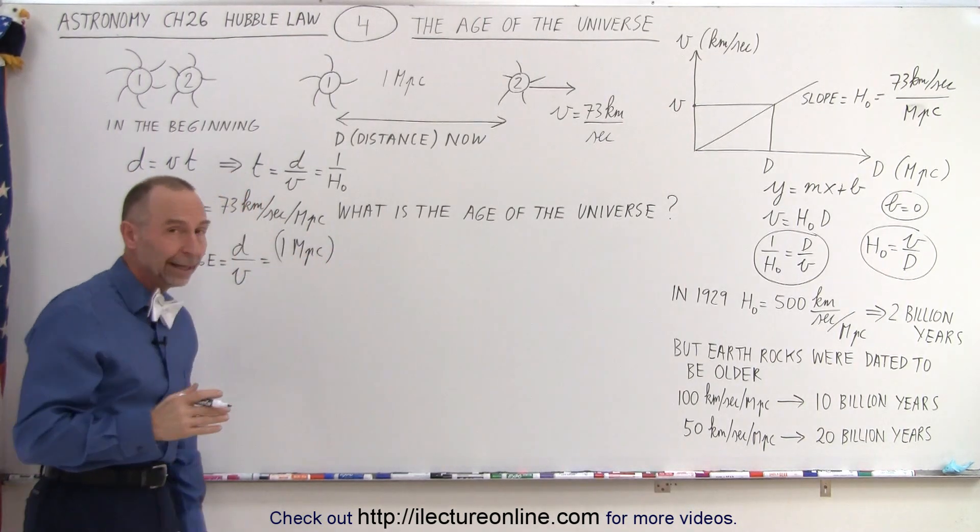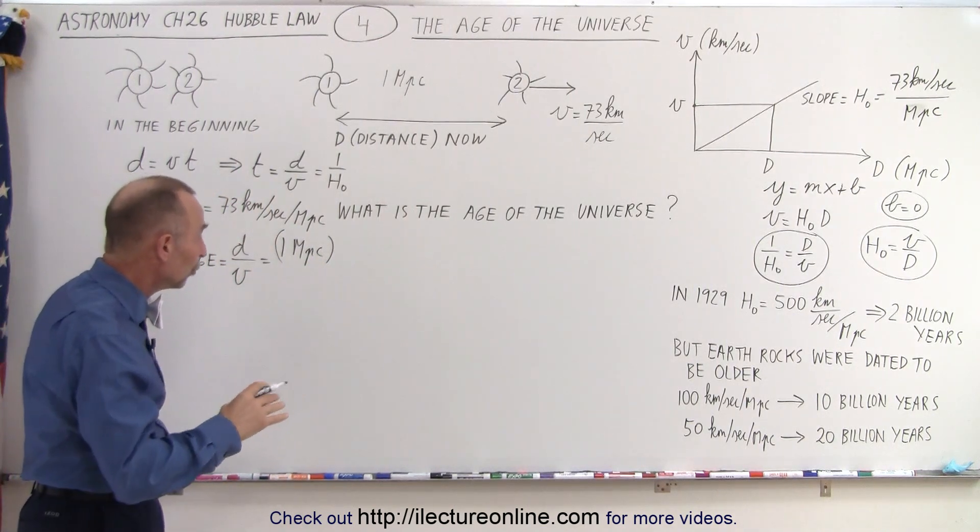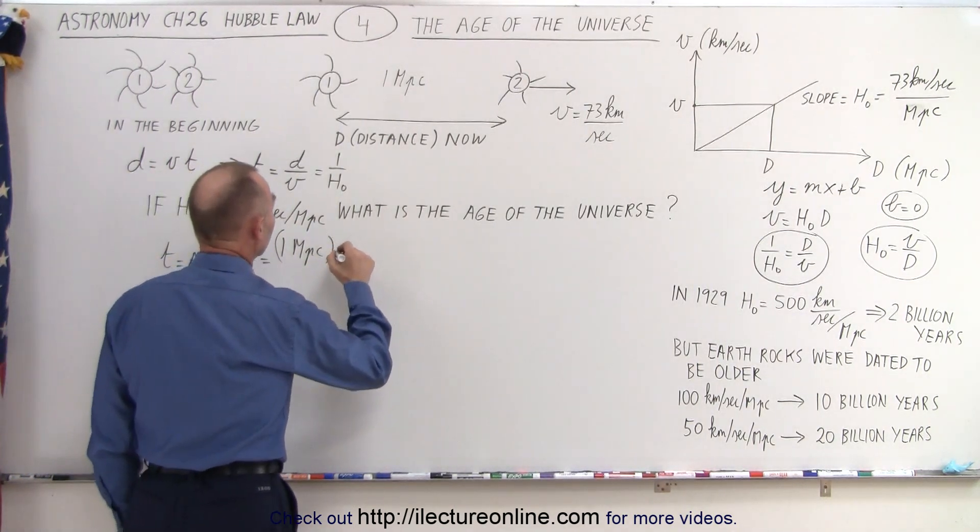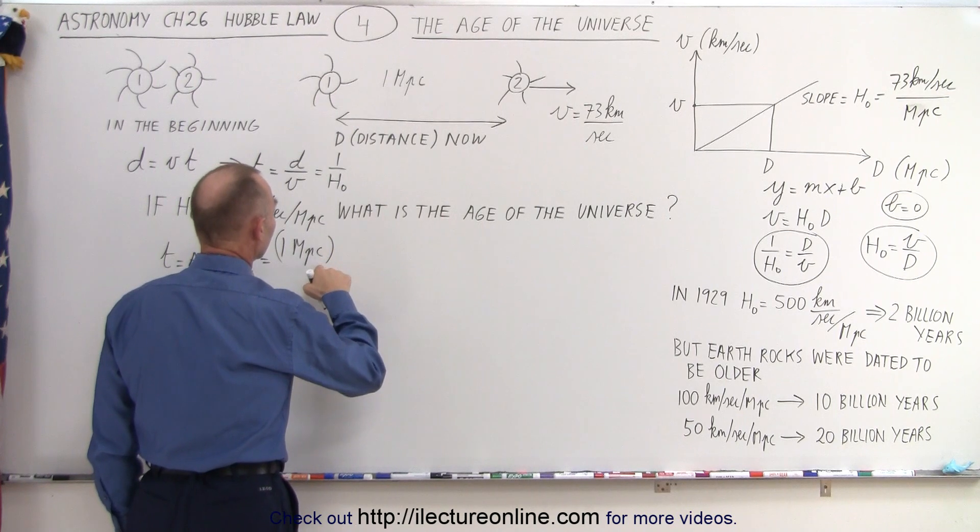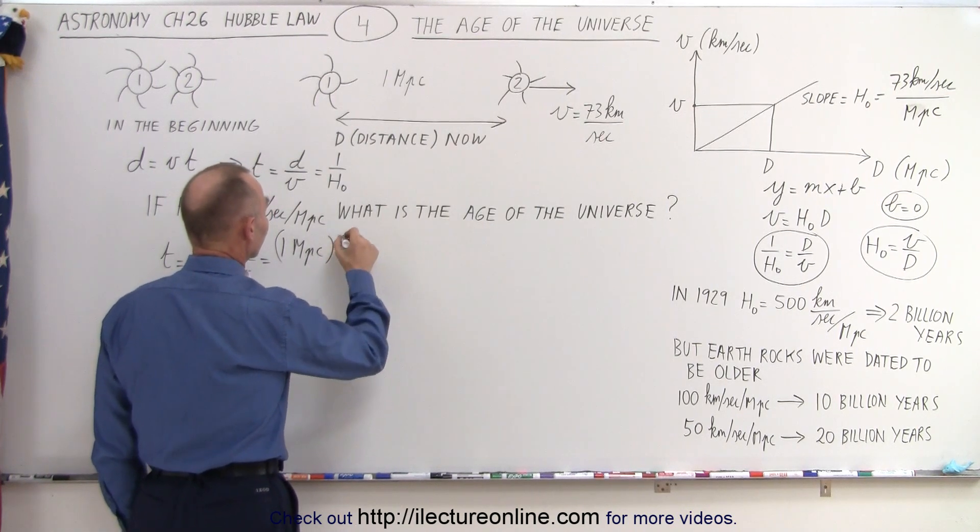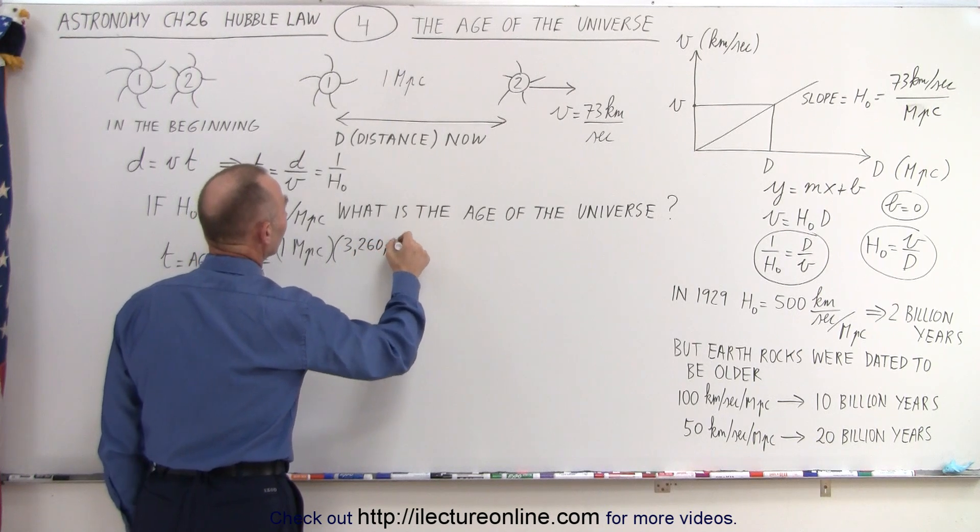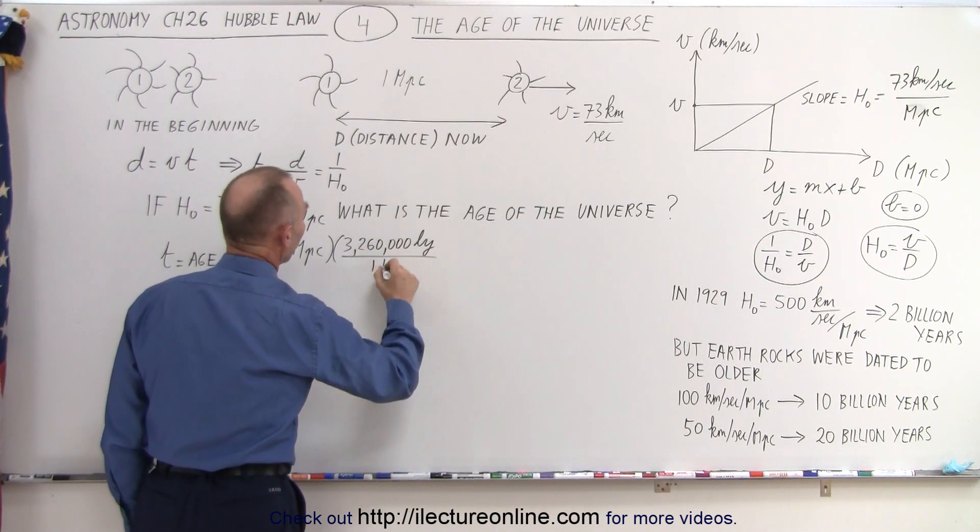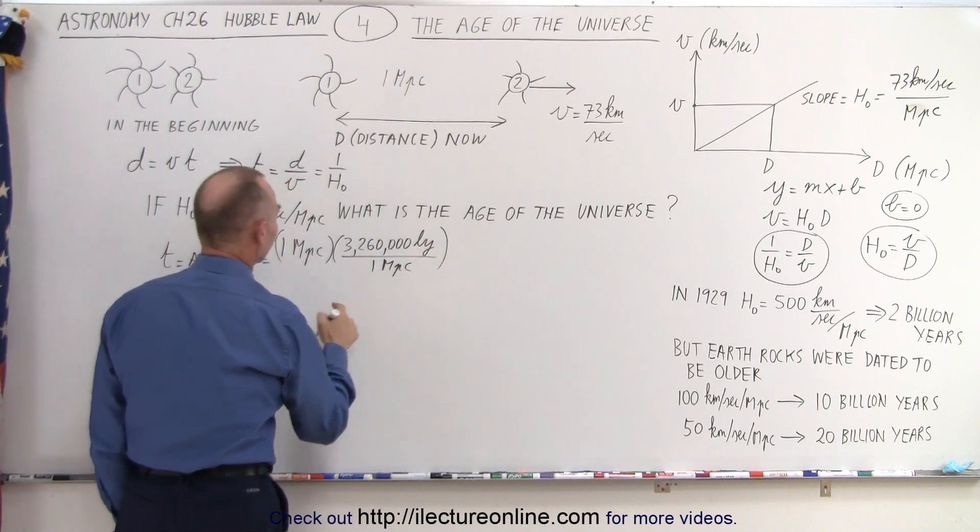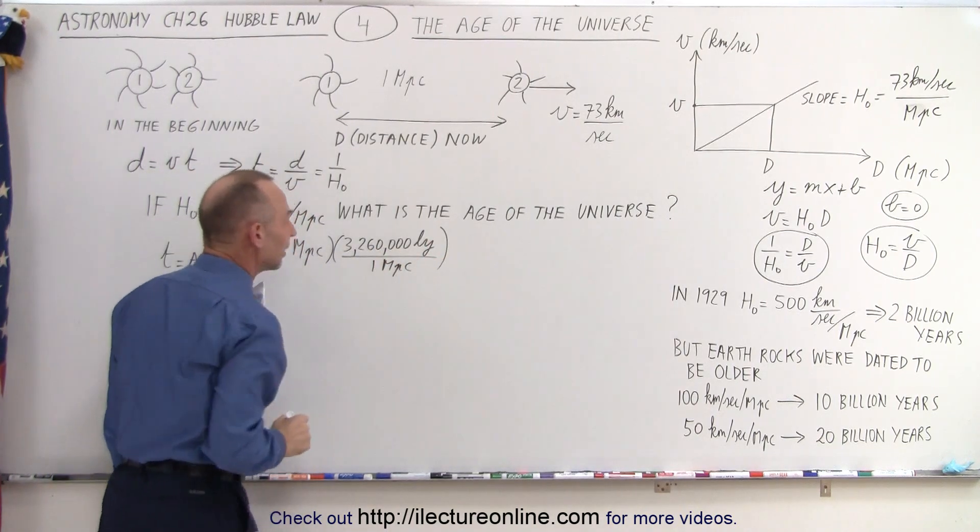Now, of course, mega means a million, and 1 parsec is 3.26 light years. So that means that this can be converted to 3.26 light years, or 3,260,000 light years per 1 megaparsec. So now we've converted from megaparsec to light years.